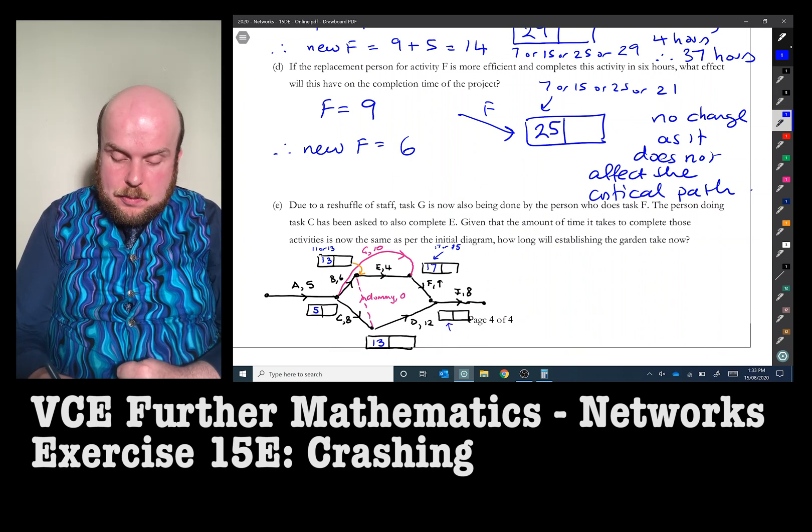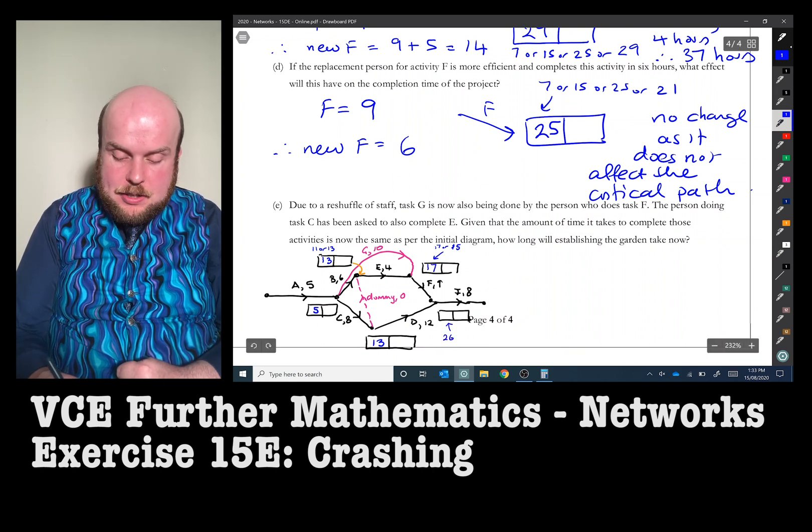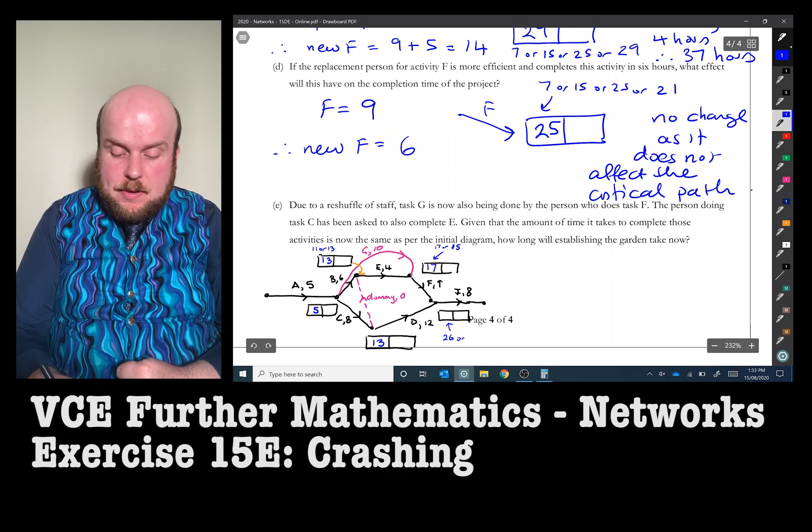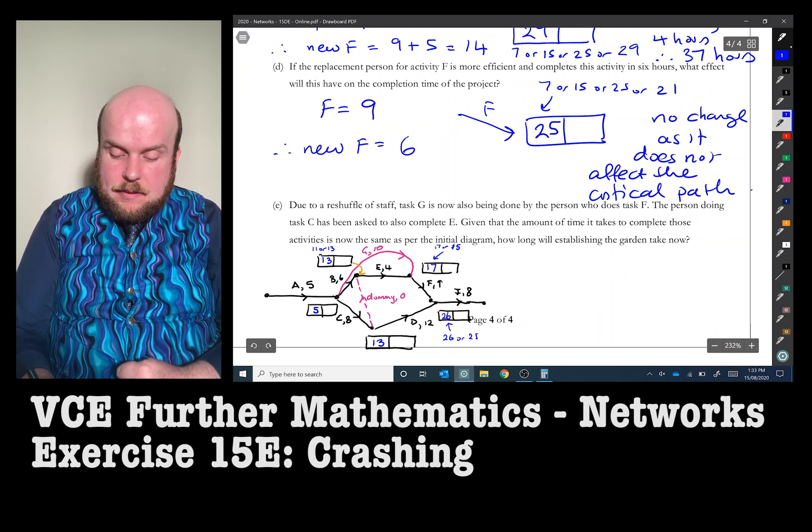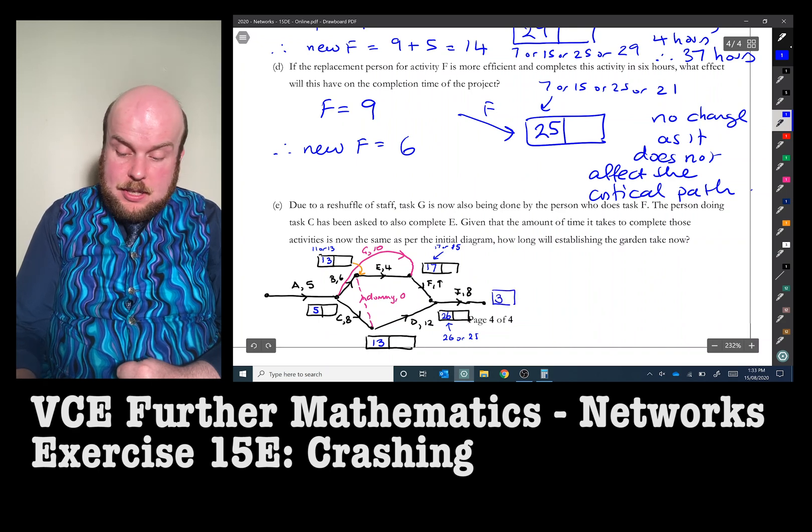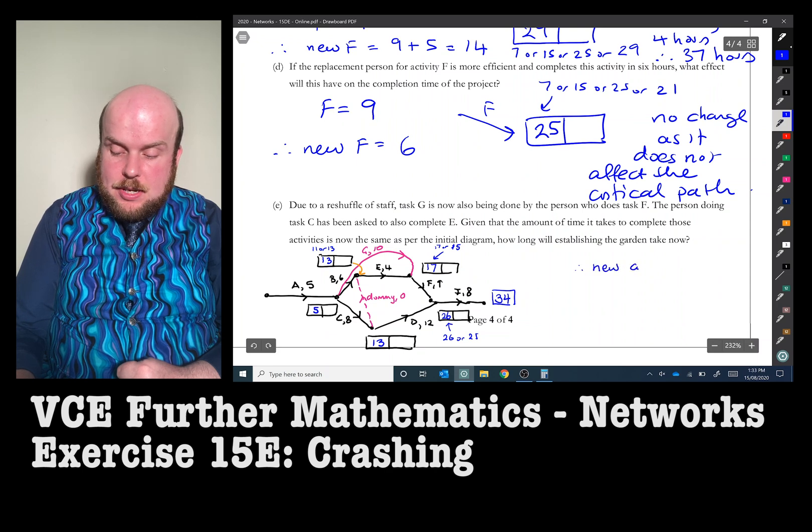So we now reach to this point. We've got 17 plus nine is 26, or we can go back to that 13 plus 12 is 25. It is 26. So therefore, 26 plus eight is 34. So the new completion time is 34 hours.